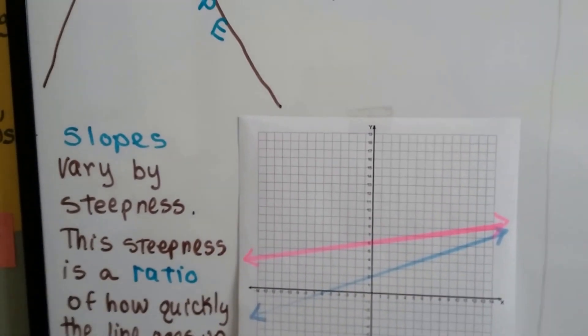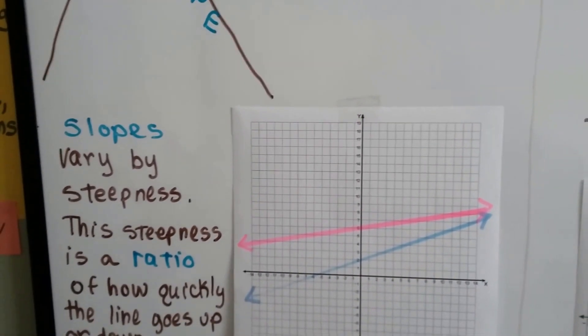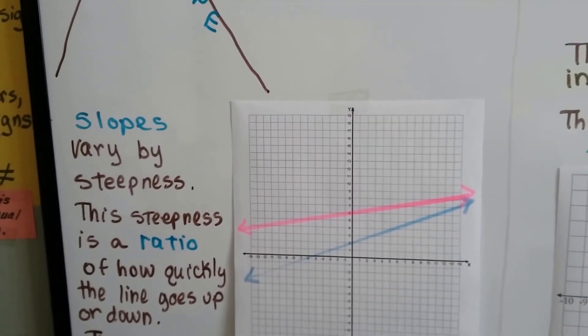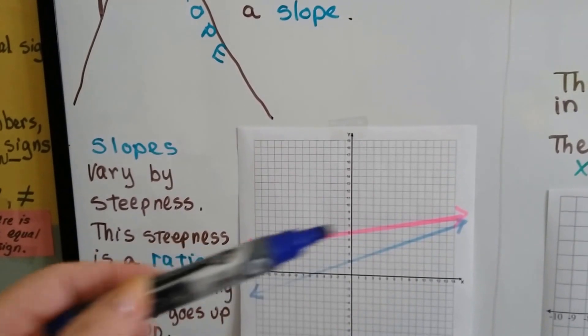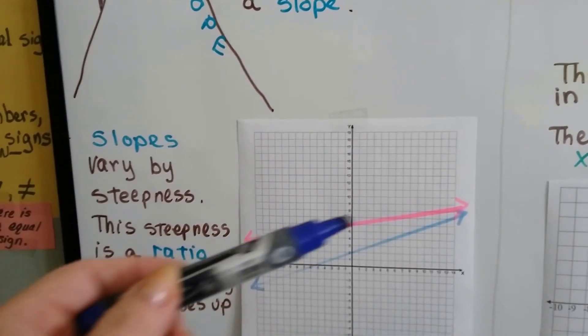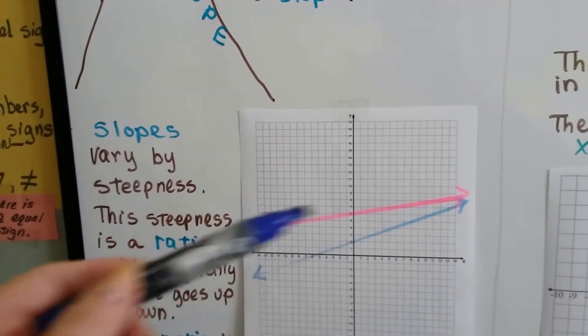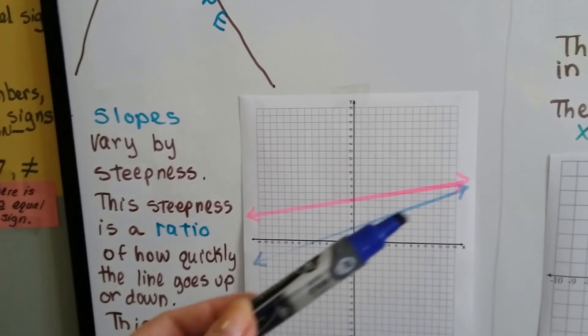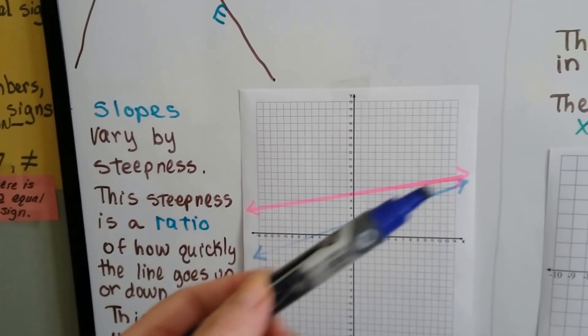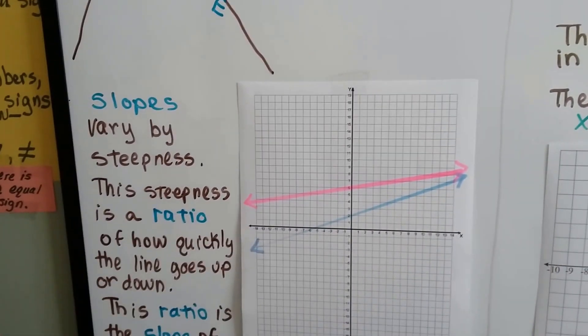And slopes vary by steepness. So this steepness is a ratio of how quickly the line goes up or down. This is very steep, isn't it? And this one's not as steep. It's hardly rising at all. It's got a very gradual rise. And this one is way more steep than this one. See how it's rising quicker on more of an angle than the pink one?